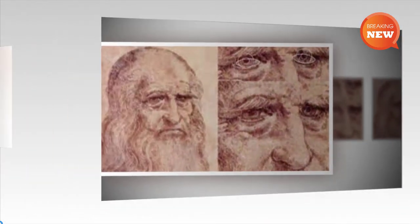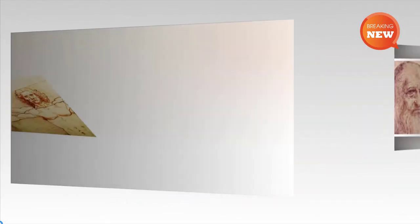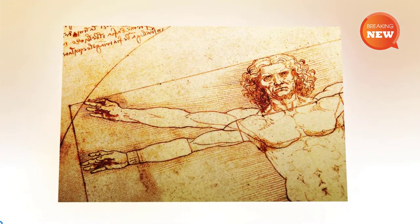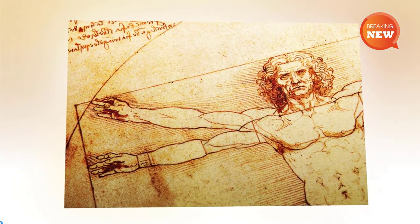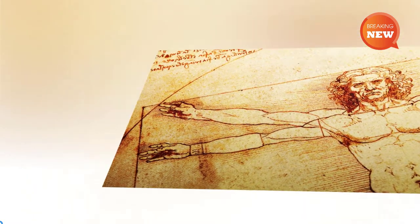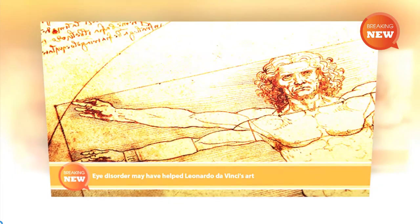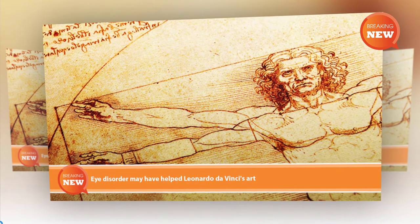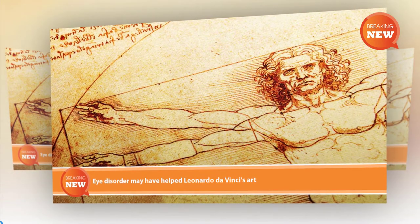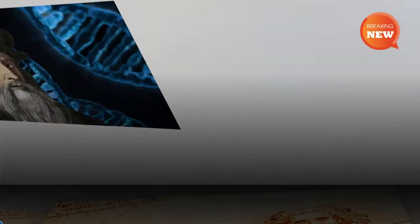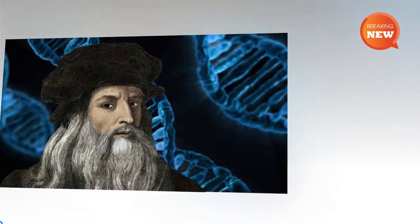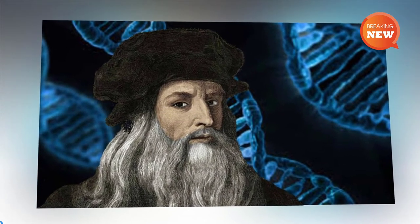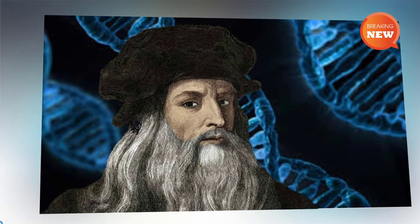Exotropic strabismus is a form of eye misalignment and is the opposite of crossed eyes, or esotropia. A misalignment of 10.3 degrees would be considered a medium level. People with strabismus often have monocular instead of binocular vision, meaning that both eyes are used separately, thereby increasing the field of view and depth perception.